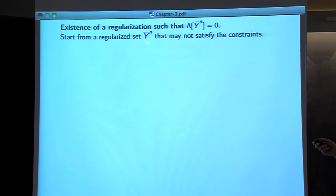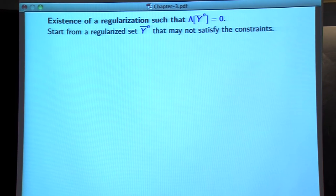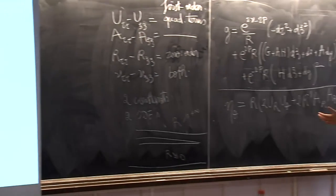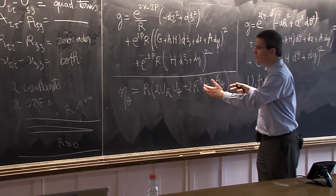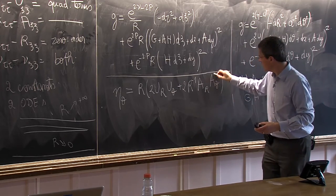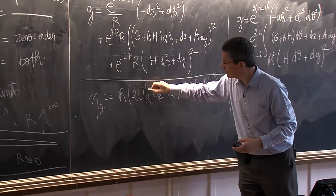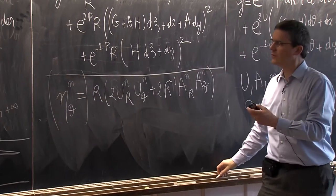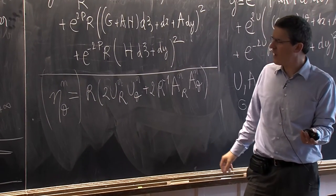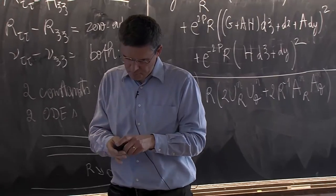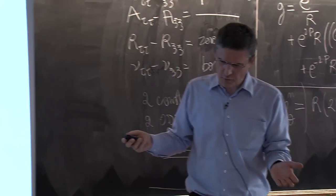We need to derive uniform estimates for the four main coefficients: U, A, R, and ν. G and H are more or less decoupled. There will be four different arguments controlling these four variables, with U and A treated together since they have the same regularity and appear together in the main energy. There is a bootstrap argument underlying the proof, and I will show the main estimates which are strong enough to control the time of existence.